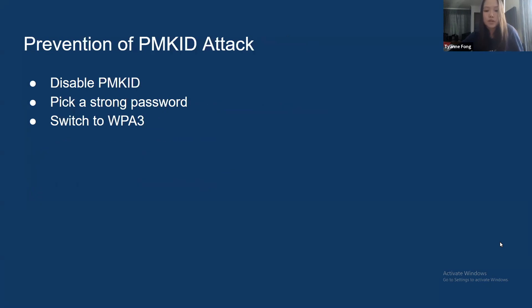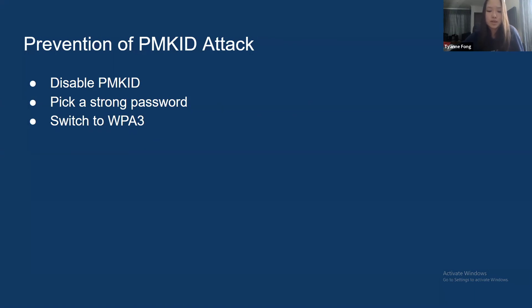There are several ways to prevent a PMKID attack. You can disable PMKID caching or pick a strong password. Since the attack will not work against WPA3 — which is much harder to attack because of its modern key establishment protocol — switching to WPA3 will effectively prevent a PMKID attack.